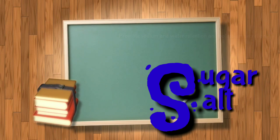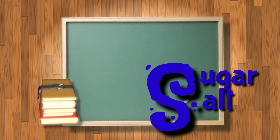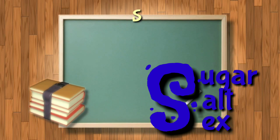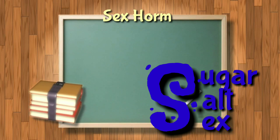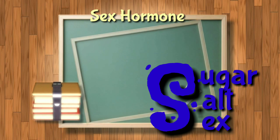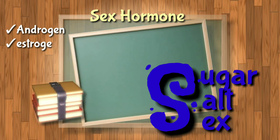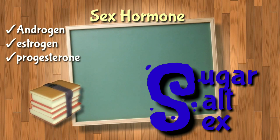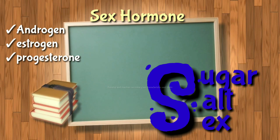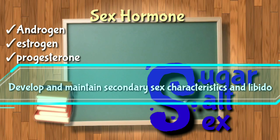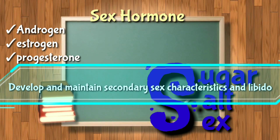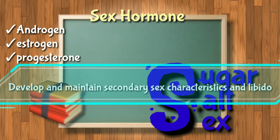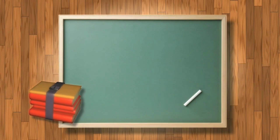So we have the sugar, the salt, and for the third S is sex, which is for the sex hormone. It includes androgens, estrogen, and progesterone, which develop and maintain secondary sex characteristics and libido.